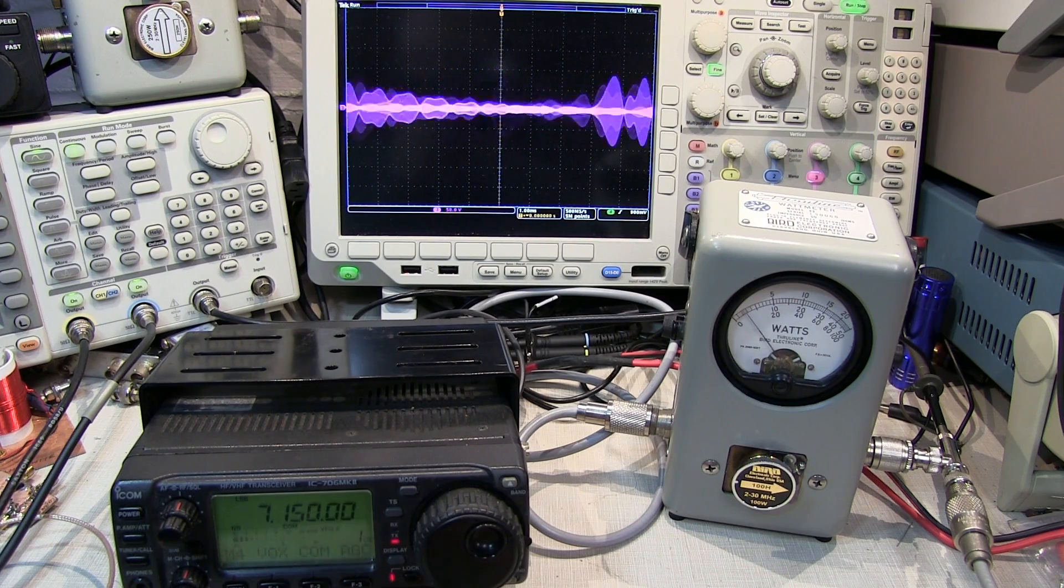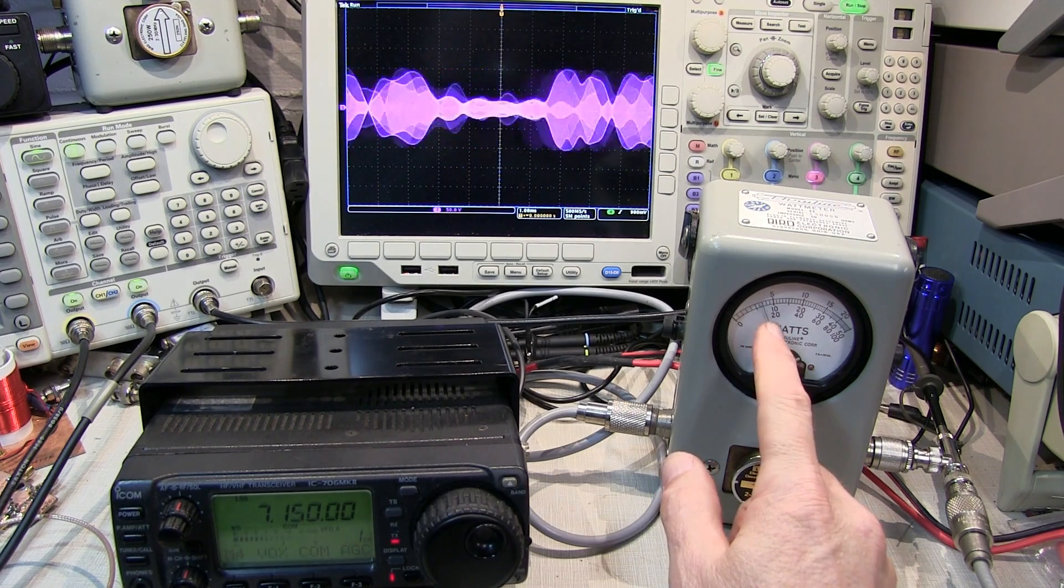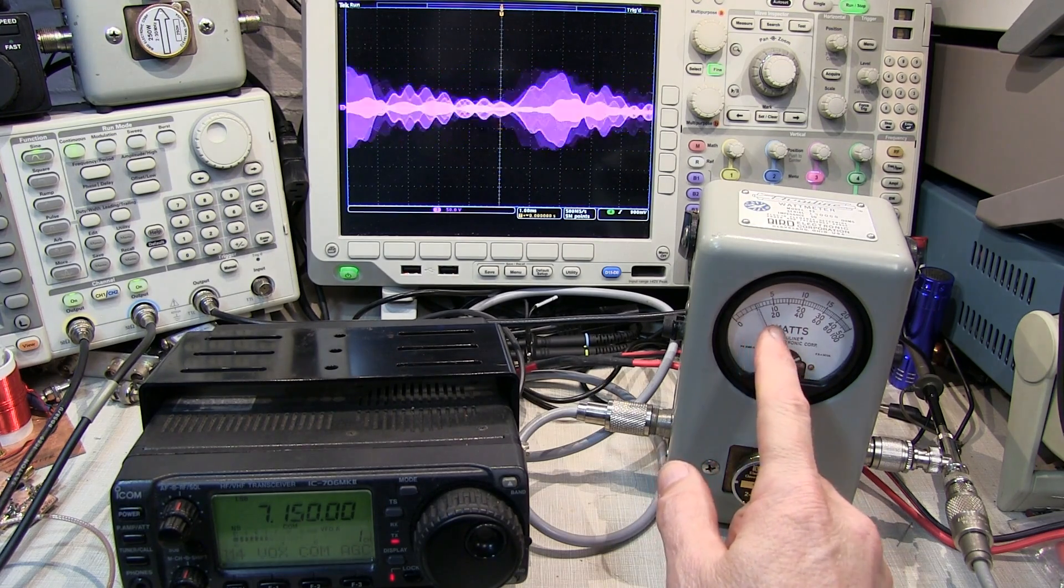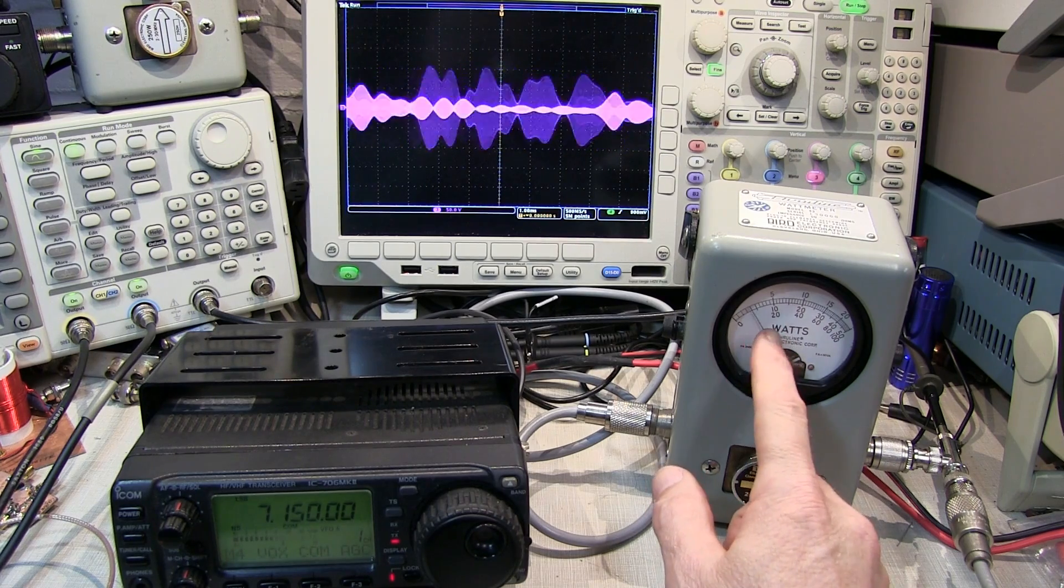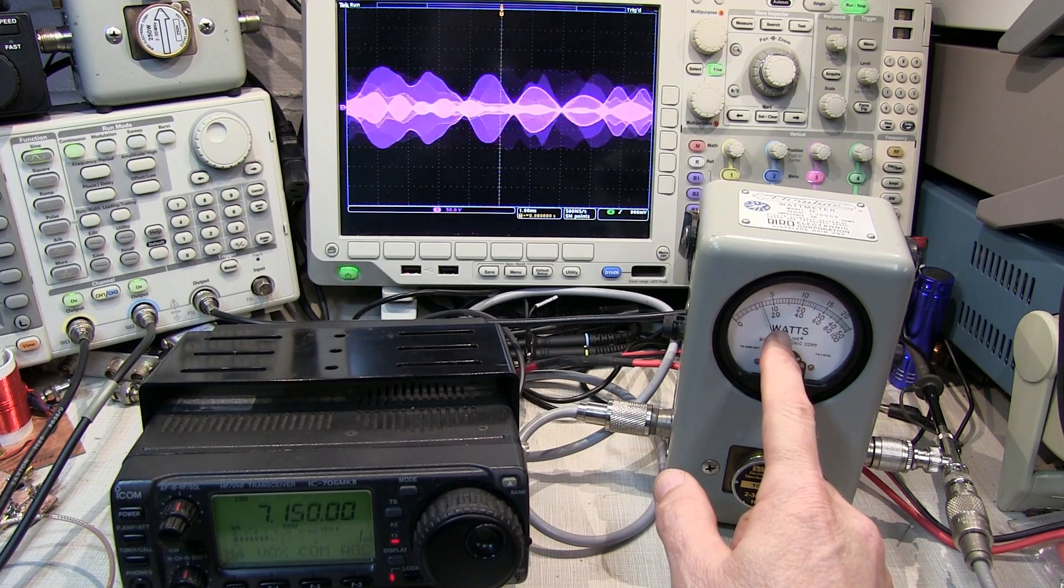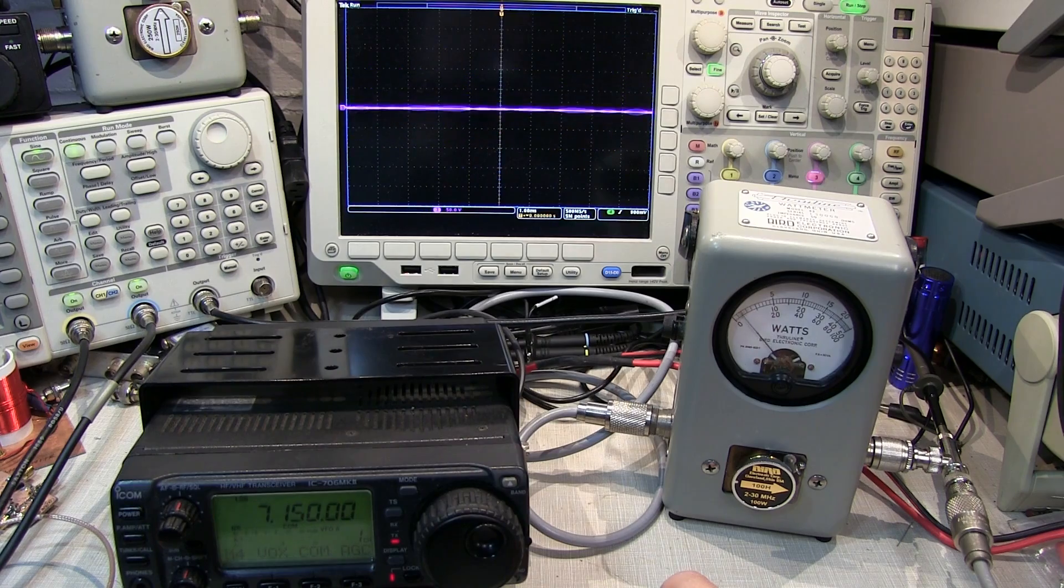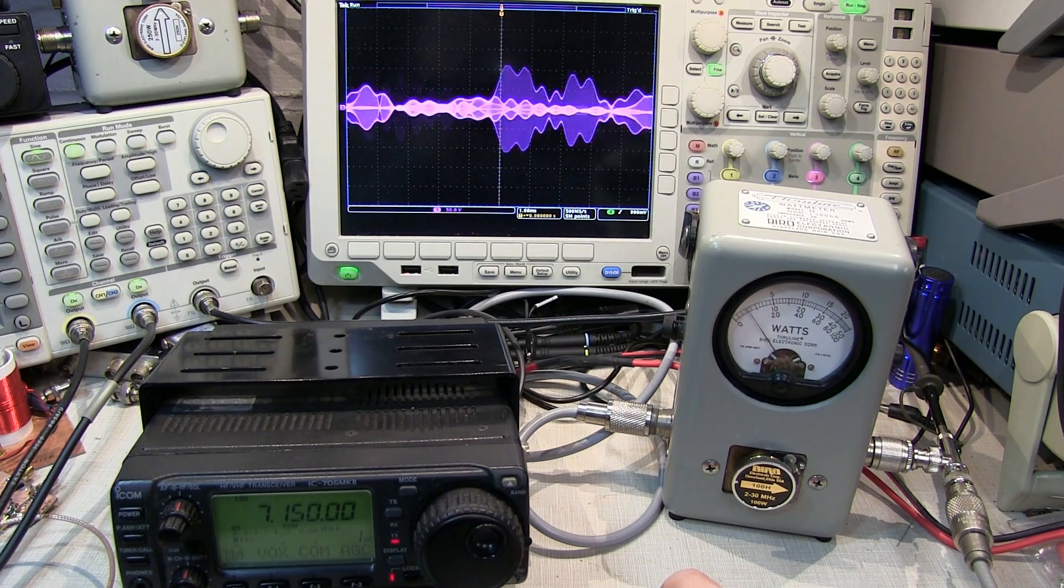Now, if you engage something like a speech compressor like I just did here, you can see that the average power that we're going to see on the meter is going to go up. But again, I'm not getting much more than 10 to 20 watts of observable power here on the power meter, even though I can tell from the scope I'm definitely reaching that 100 watts peak envelope power.